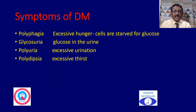What are the symptoms of diabetes mellitus? Polyphagia, which means excessive hunger — though there is a lot of glucose in the blood, the cells are starved of glucose, so a person feels excessively hungry. Glucosuria means glucose in the urine, because excess glucose in the blood gets filtered by the kidney, leading to excessive urine containing glucose. Polyuria is excessive urination, and polydipsia means excessive thirst.